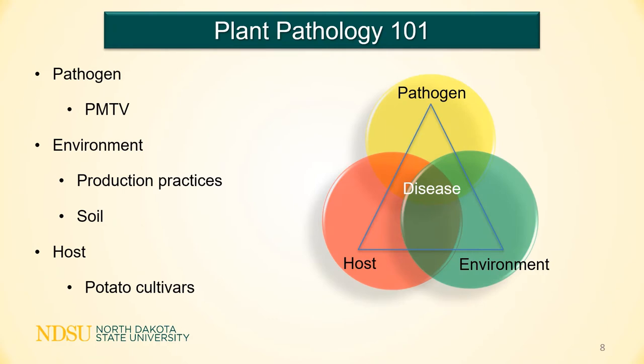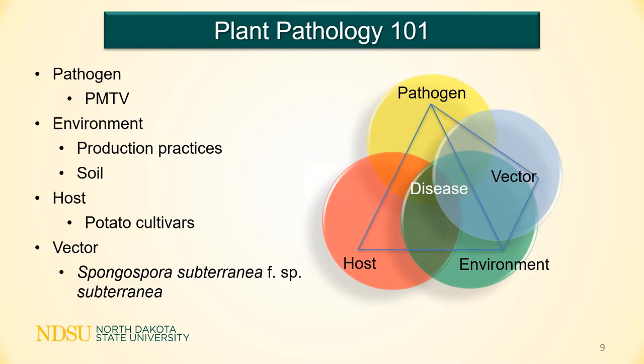PMTV is a complex pathogen, so I want to talk a little about plant pathology. On the right-hand side, we have what we call our disease triangle — the pathogen interacting with the environment, including production practices or the soil environment where PMTV resides, as well as the host, including the potato cultivars you grow. With PMTV, we have to add a fourth side to make a pyramid, and that is for the vector, Spongospora subterranea subterranea.